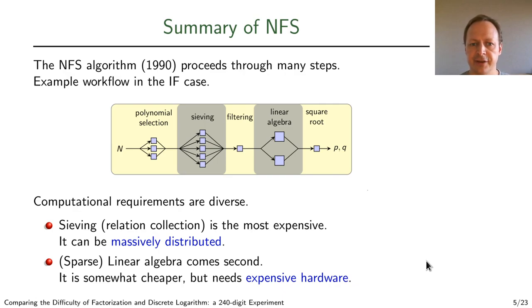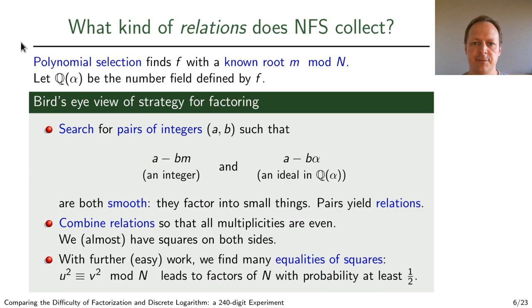To give a brief explanation of NFS, I need to start with polynomial selection and explain what NFS does. Polynomial selection is the first step of NFS. Within polynomial selection, we select a pair of integer polynomials. One of them defines a number field, Q of alpha.